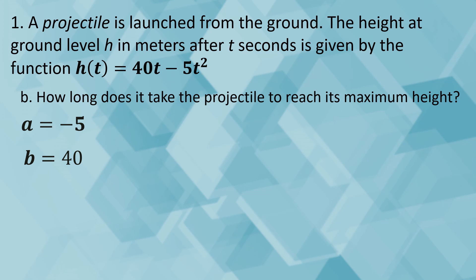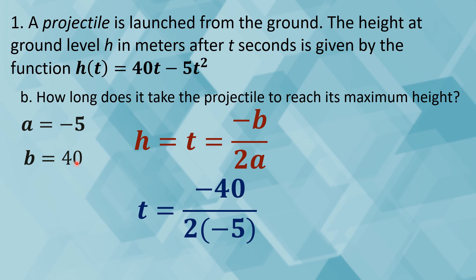How long does it take the projectile to reach its maximum height? We need to recall that we are referring to the value of h of the vertex, where h is time. So h equals t, which is time, equal to negative b over 2a. Here a is negative 5, since the numerical coefficient of t squared is negative 5, and b is 40 since we have 40t. Substituting: negative 40 over 2 times negative 5 gives us time equal to 4 seconds. The projectile can reach its maximum height after 4 seconds.